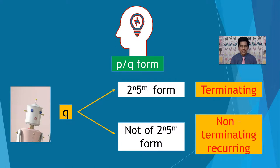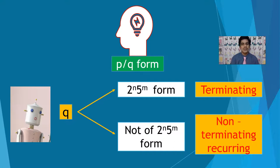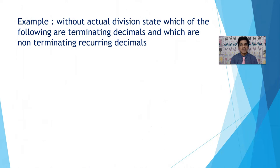If the denominator is not of the form 2 power n into 5 power m, the decimal expansion is non-terminating recurring. The denominator can have only 2s, only 5s, or a combination of 2s and 5s for the decimal to terminate. If it has any other prime factor such as 3, 11, or any prime other than 2 and 5, then the rational number has a non-terminating and recurring decimal expansion.